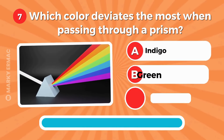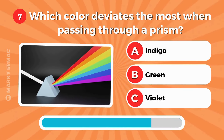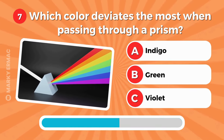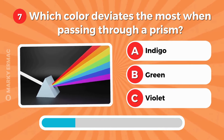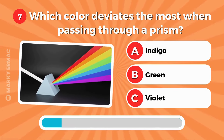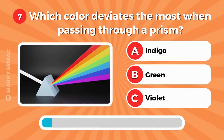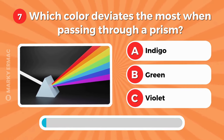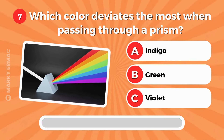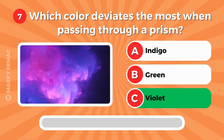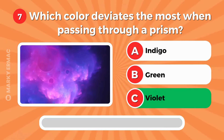Which color deviates the most when passing through a prism? Indigo, green, or violet? It's violet.